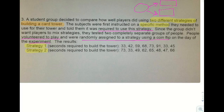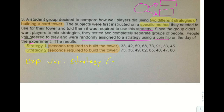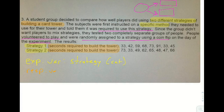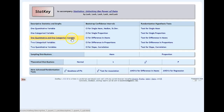The building of the card tower doesn't say in the paragraph how it's being measured, but down in the data it says seconds required to build the tower. That tells me the response variable is how long it takes in seconds to build the tower — quantitative. The explanatory variable is strategy — categorical. So in StatKey I'll be dealing with one quantitative and one categorical variable, which leads to a confidence interval for a difference in means or a test for a difference in means.